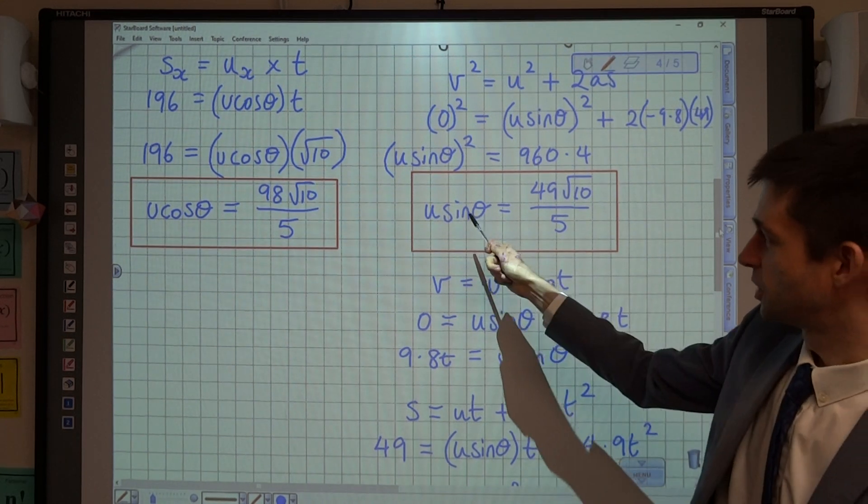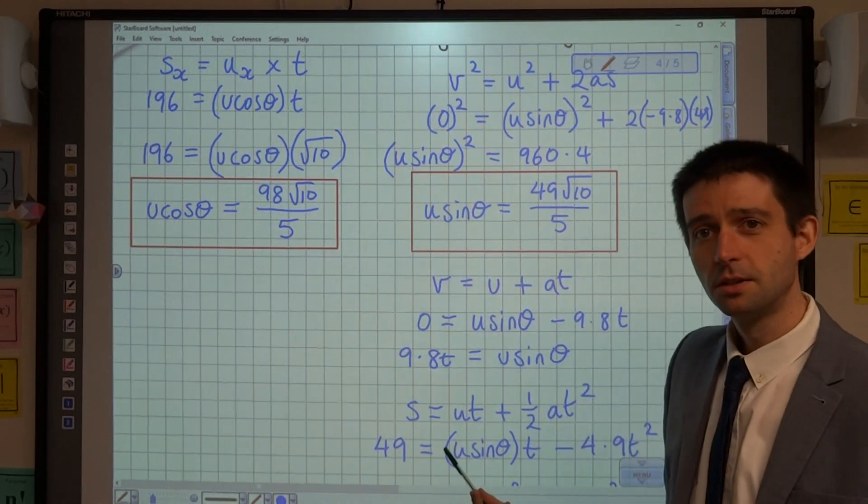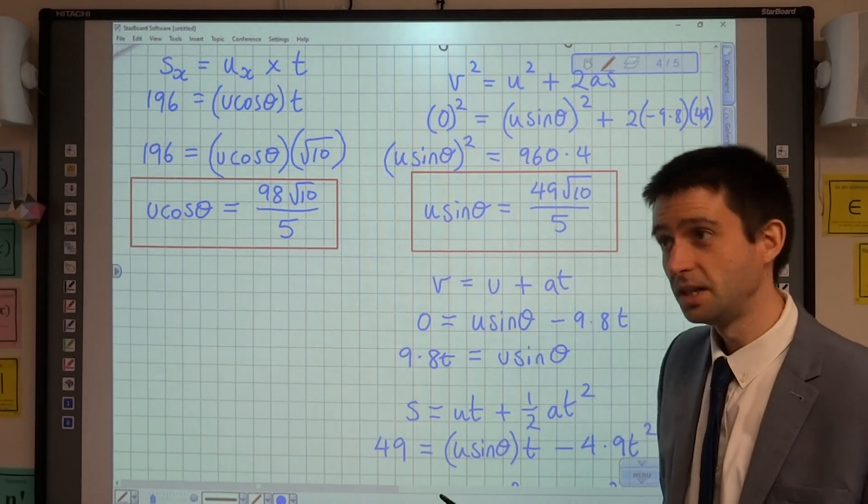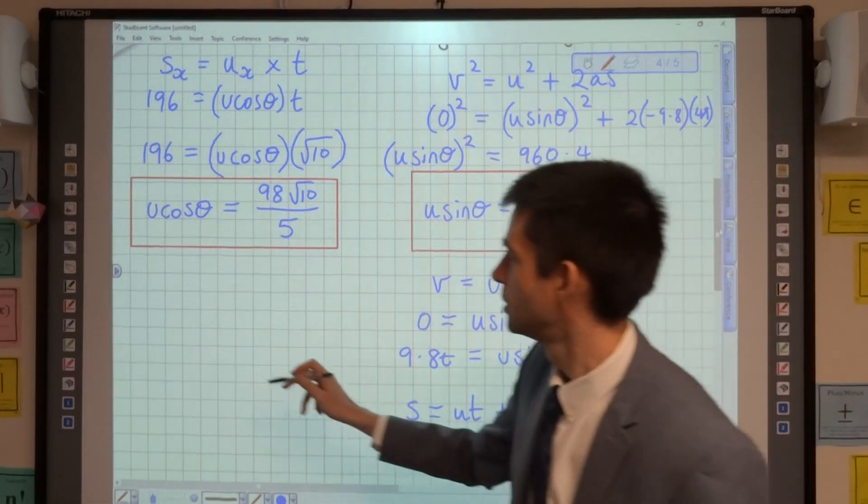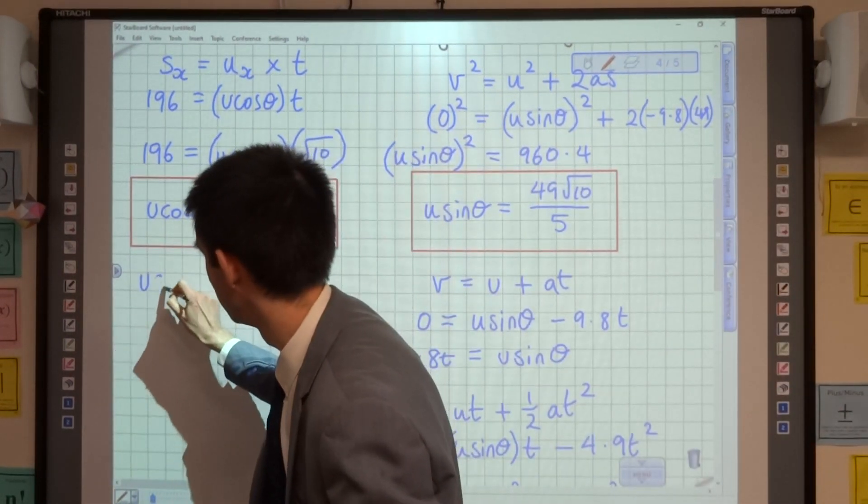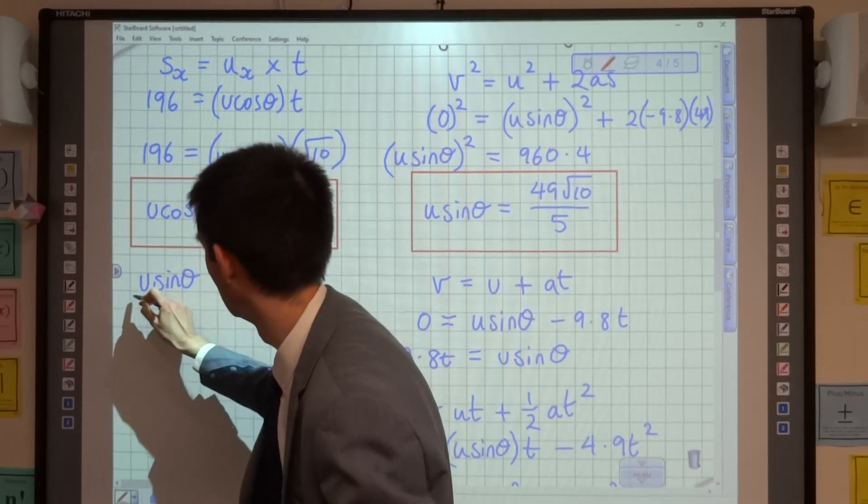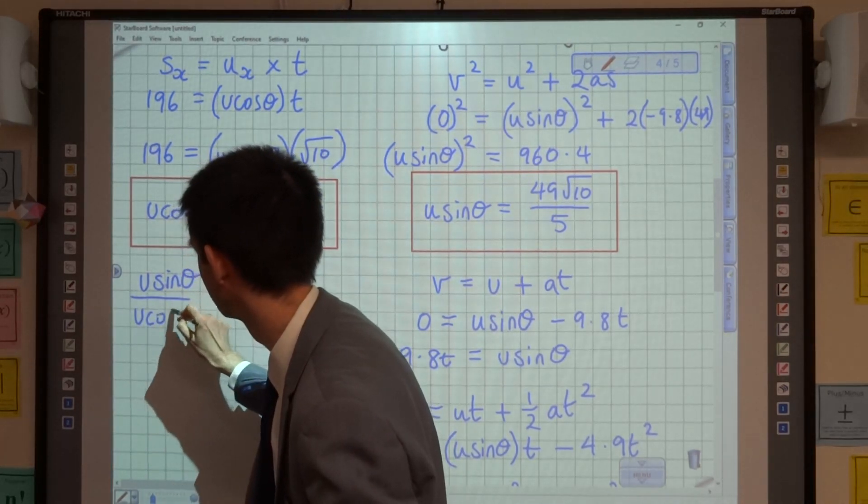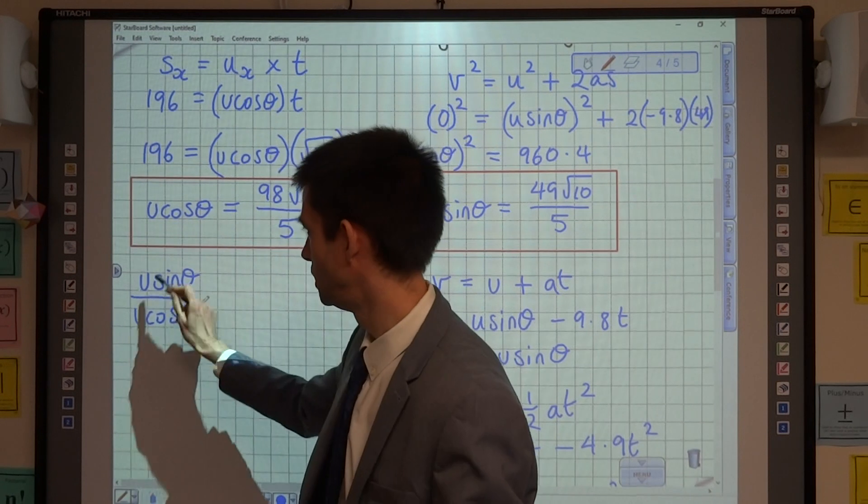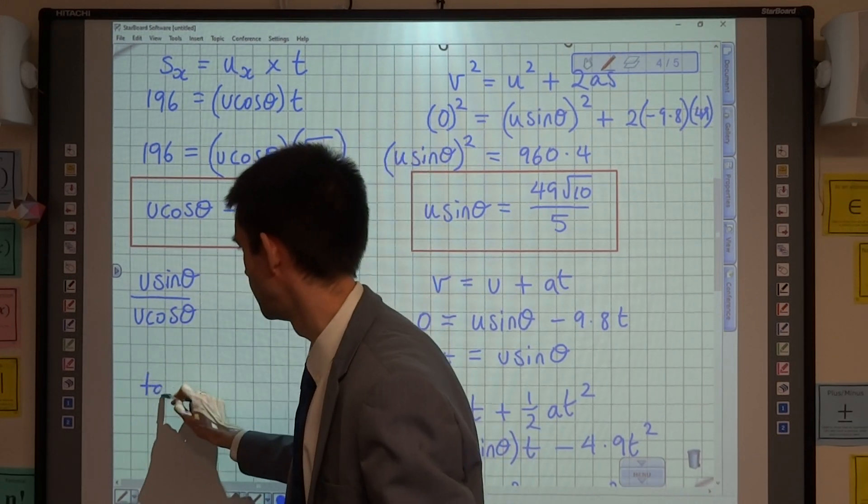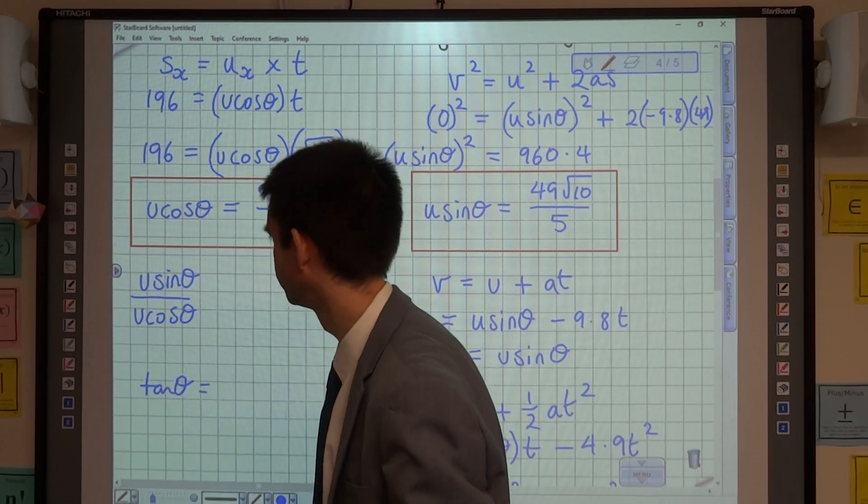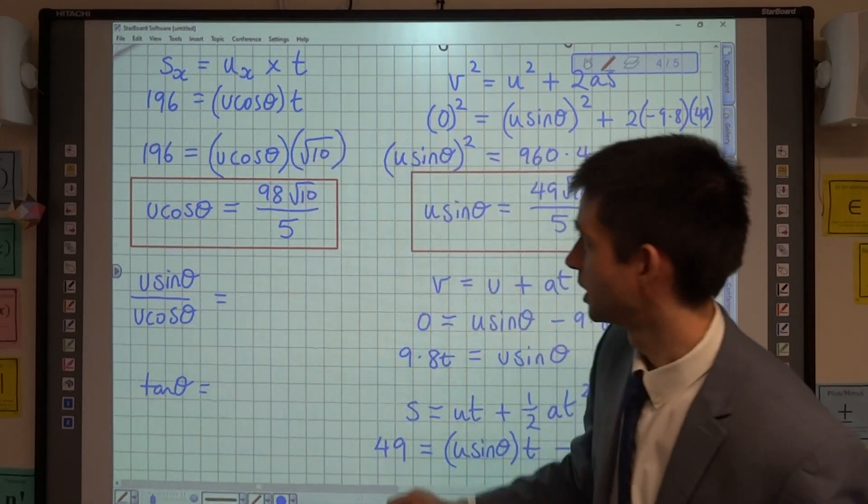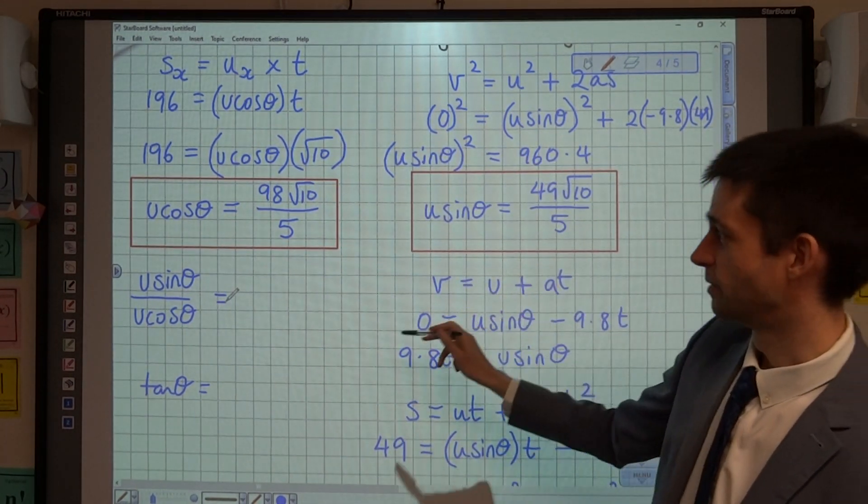What do we know about sine and cos? Well, we know that sine theta over cos theta is tan theta. So if I write u sin theta over u cos theta, the u's are going to cancel out, and it's going to give me tan theta is going to be equal to 49 root 10 over 5 over 98 root 10 over 5.